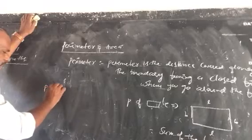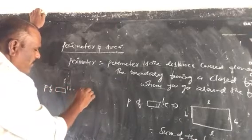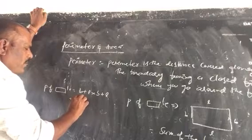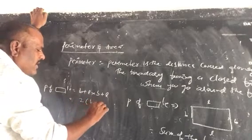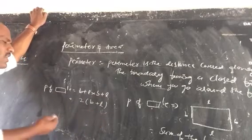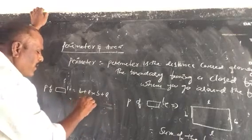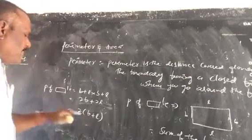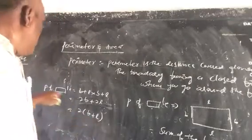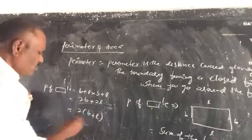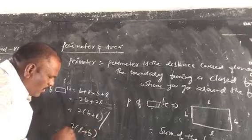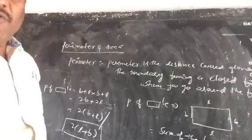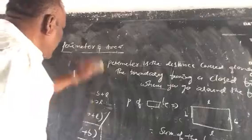So P of rectangle equals L plus B plus L plus B, which gives us 2 into B plus L — that is, 2 times breadth plus length, or 2B plus 2L. Therefore, P of rectangle equals 2 into (L plus B).